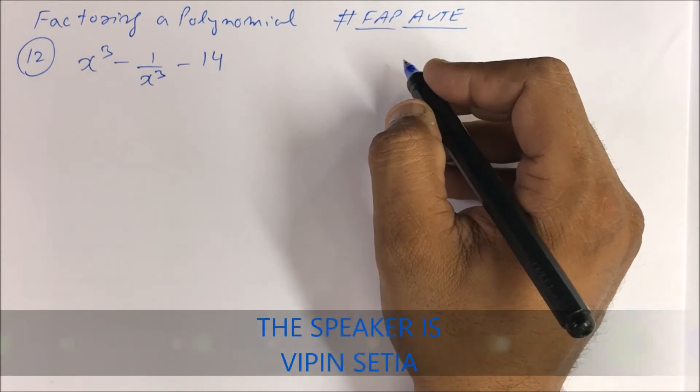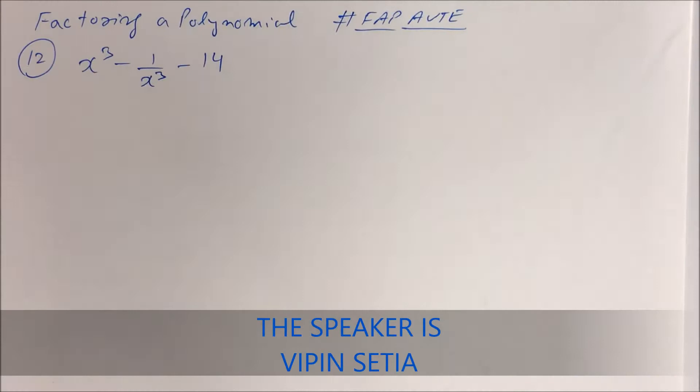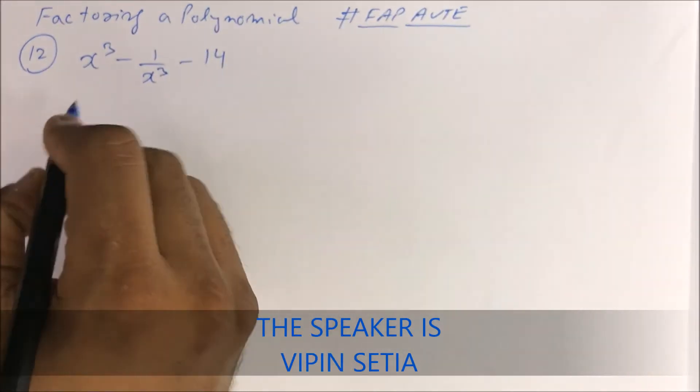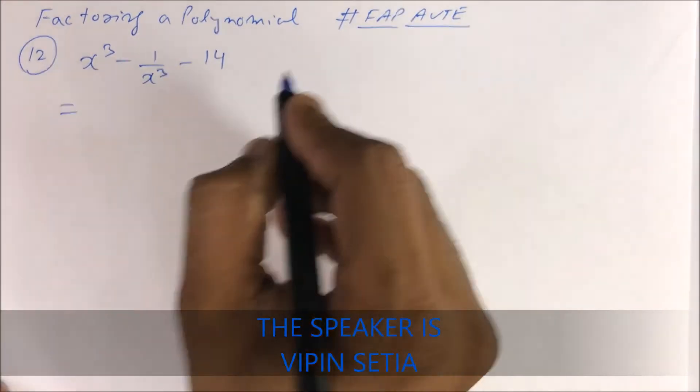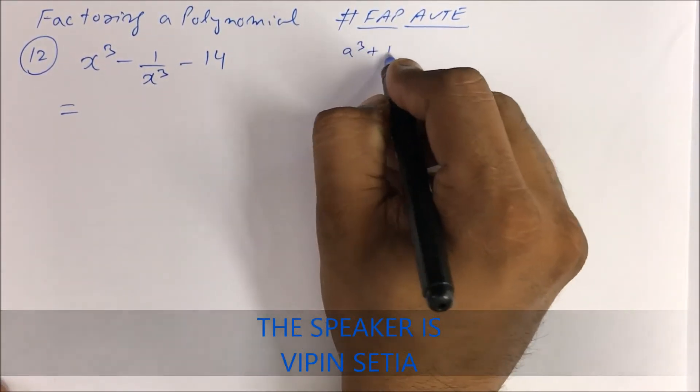and TSC or some competitive examinations. So here's a question: x³ - 1/x³ - 14. Let's see how to do this. I think we have done this formula: a³ + b³ +